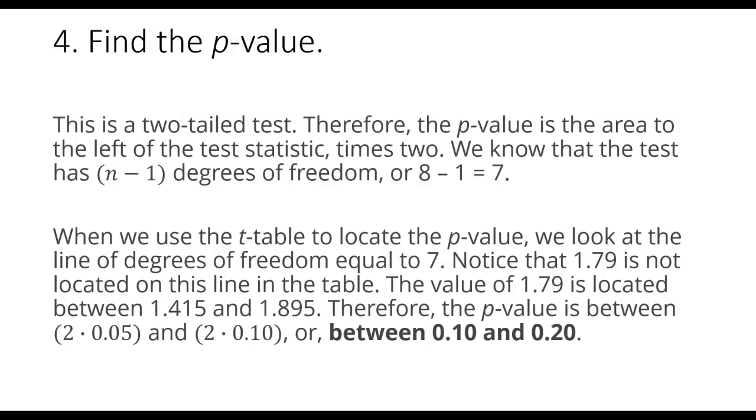So we need to find where does it fall. Well, 1.79 is located between the two given values of 1.415 and 1.895. Therefore, the p-value is going to lie somewhere between them. And because we have to multiply by two, we end up with the p-value being somewhere between 0.1 and 0.2.